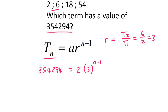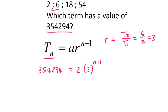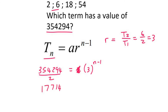Then n we don't know, so we leave that. Now what a lot of students do is they multiply these two together and they call it 6 — that is not correct, because this n minus 1 is only an exponent for the 3. So what we can do now is we need to try to get n by itself. I divide by 2 first on the left-hand side, and so that's 177147 equals 3 to the n minus 1.